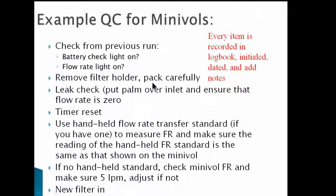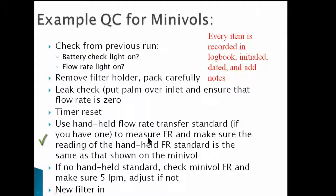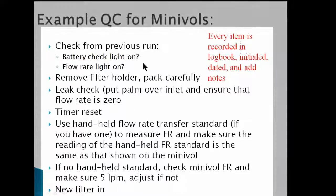You do a leak check — it's not very sophisticated, but it's effective. You put your palm over the inlet and make sure the flow rate drops to zero. If it doesn't, you've got a leak somewhere. You reset your timer. If you've got a flow rate transfer standard, you check the flow rate; if not, you use what the mini ball says and make sure it's five liters per minute. You put a new filter in. Quality control has to be built into your procedures as part of what you're doing — all this stuff can take a while because you have to write it all down.